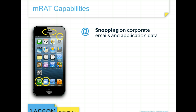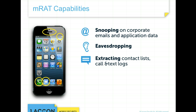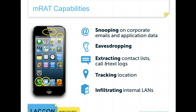An MRAT on an infected employee's device is capable of snooping on corporate emails containing contracts, eavesdropping on customer or board meetings, accessing third-party apps such as Skype, and retrieving the data of enterprise-dedicated apps in order to track roadmap activities. MRATs can also trail a sales executive's location and infiltrate the internal corporate network to retrieve sensitive passwords of corporate servers.